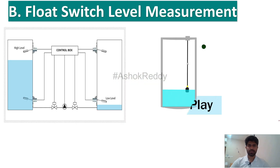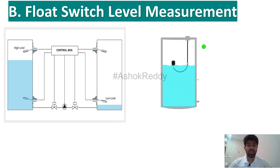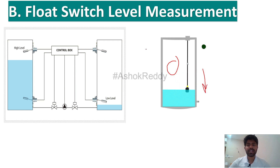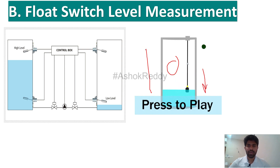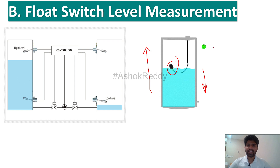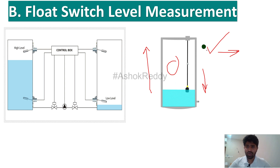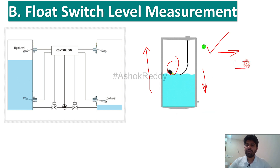The second one is the float switch level measurement. In this one, we have installed a float switch. Whenever the water is low it goes down, and whenever the water is high it comes up. When the water is high we consider it as 1 (level is high), and when water is not there it goes down and we consider it as 0 (level is low). This is how we measure using the float switch.